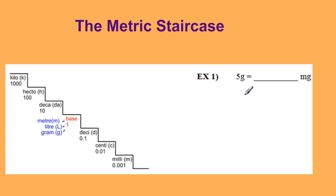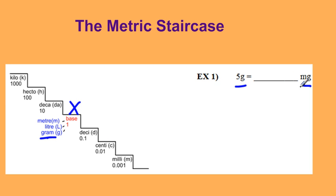If I wanted to convert between grams and milligrams, I'm given five grams so I'm going to start on the gram stair. Gram is one of my base units so I'm starting right there. I'm converting to milligrams so I'm looking for that small m, which is down there, and I'm going down three stairs.